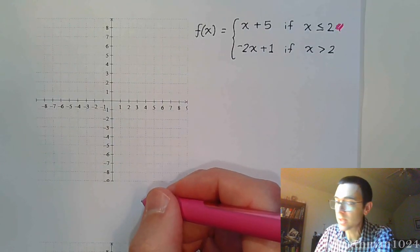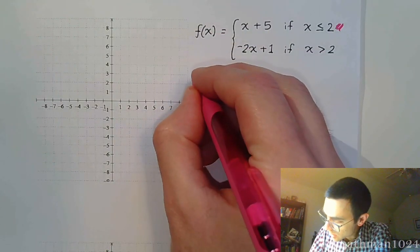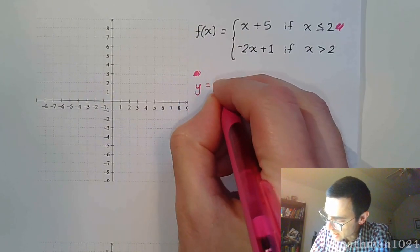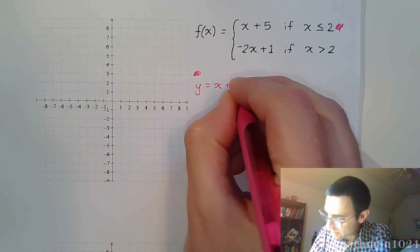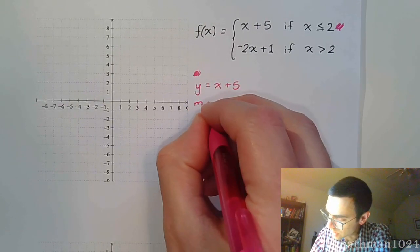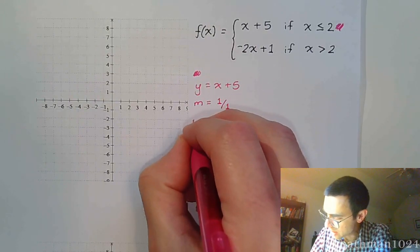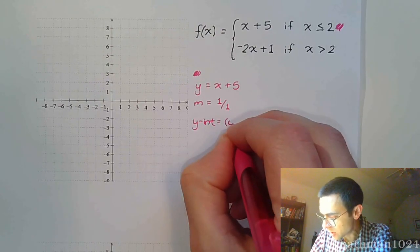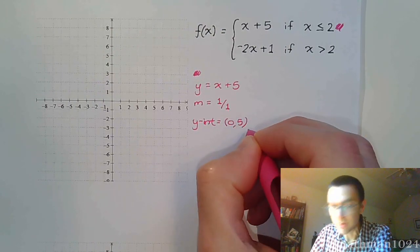Remember that f of x is the same thing as saying y. For the pink guy, we can just say that y equals x plus 5. By doing that, we can easily pick off the slope, which is 1 over 1, and the y-intercept, which is the ordered pair (0, 5).